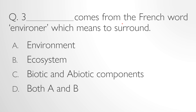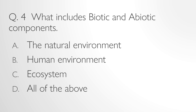Blank comes from the French word 'environner' which means to surround — environment, ecosystem, biotic and abiotic components, or both A and B? The answer is environment. What includes biotic and abiotic components — the natural environment, ecosystem, or all of the above? The right answer is the natural environment includes biotic and abiotic components.